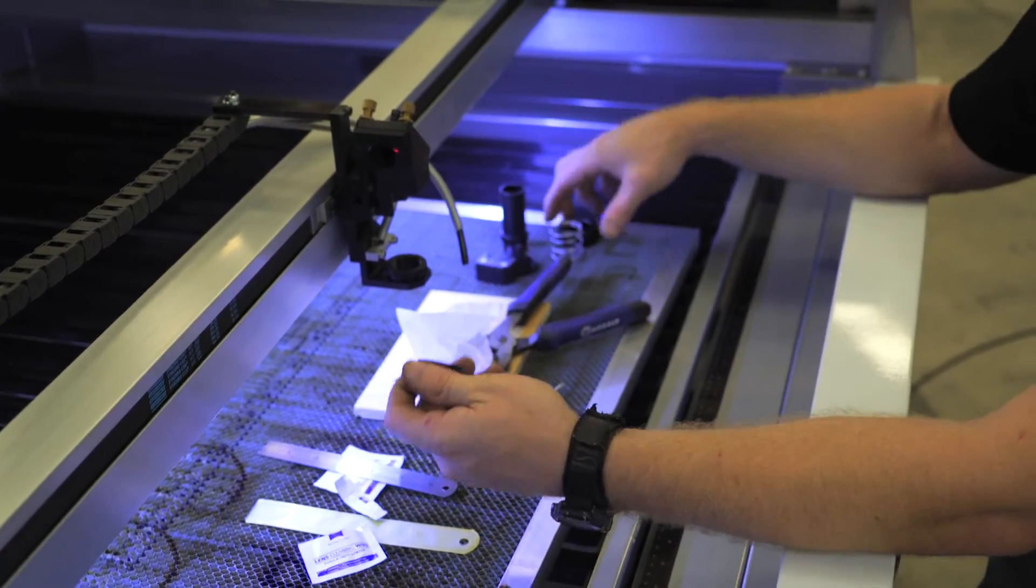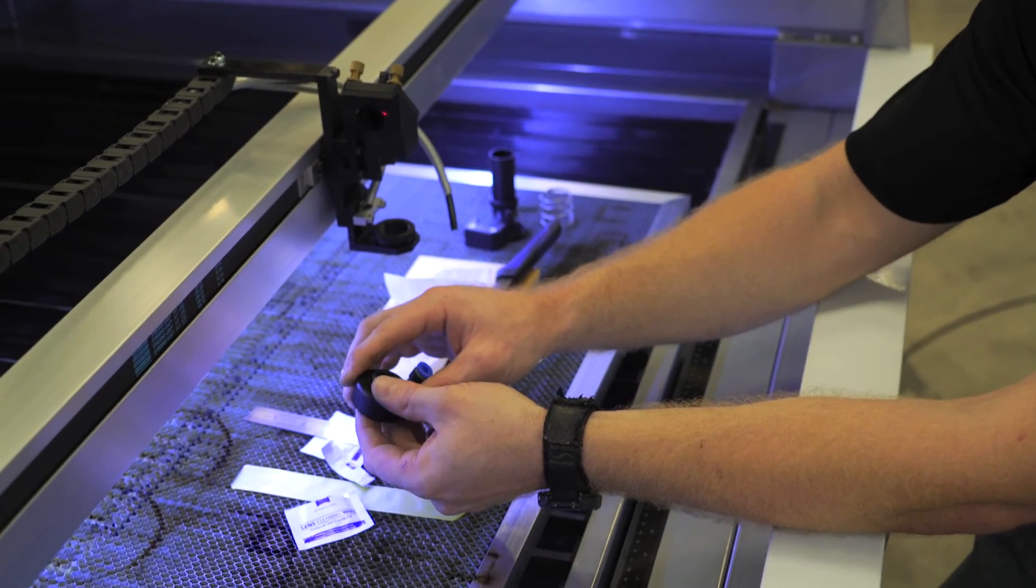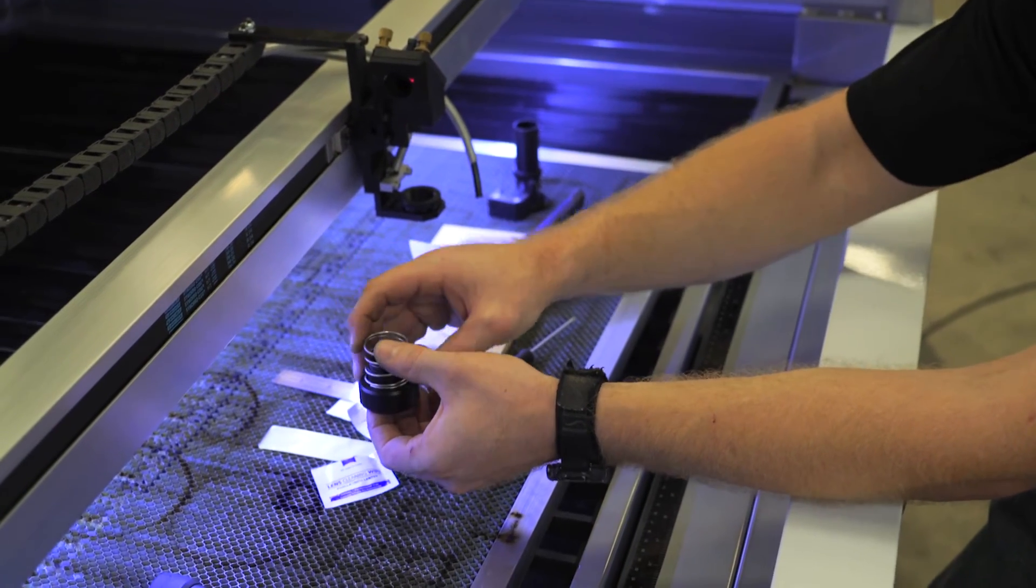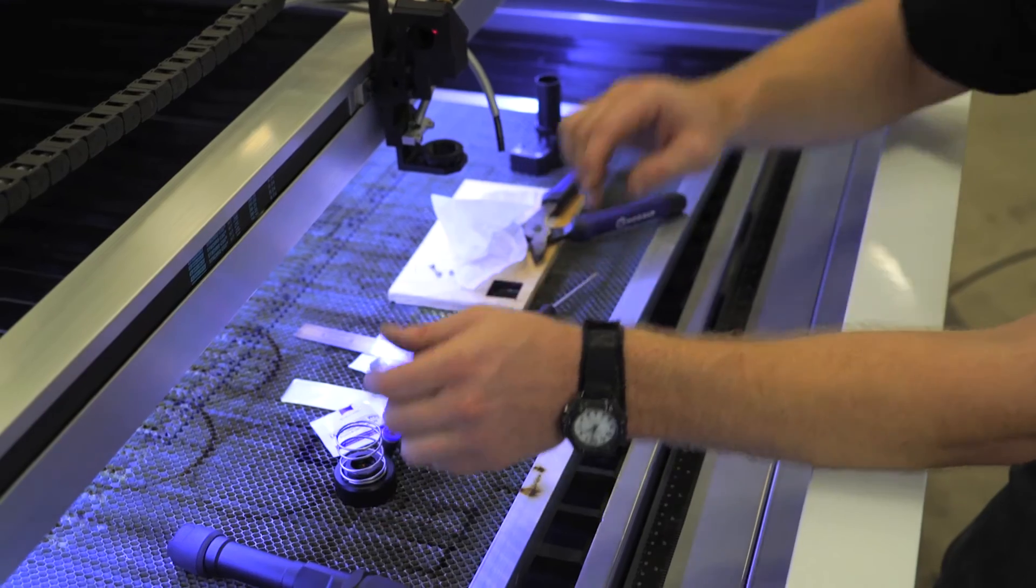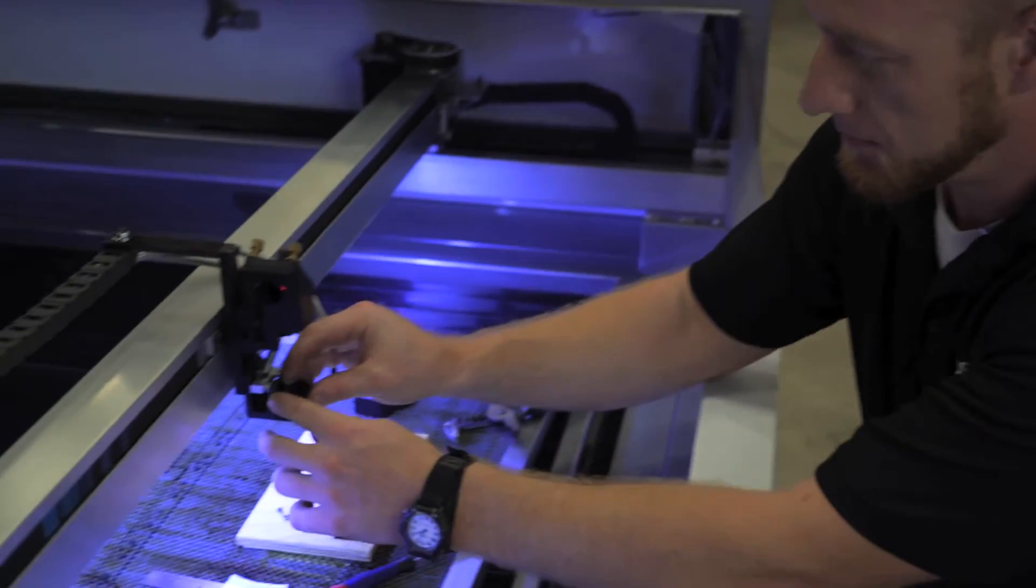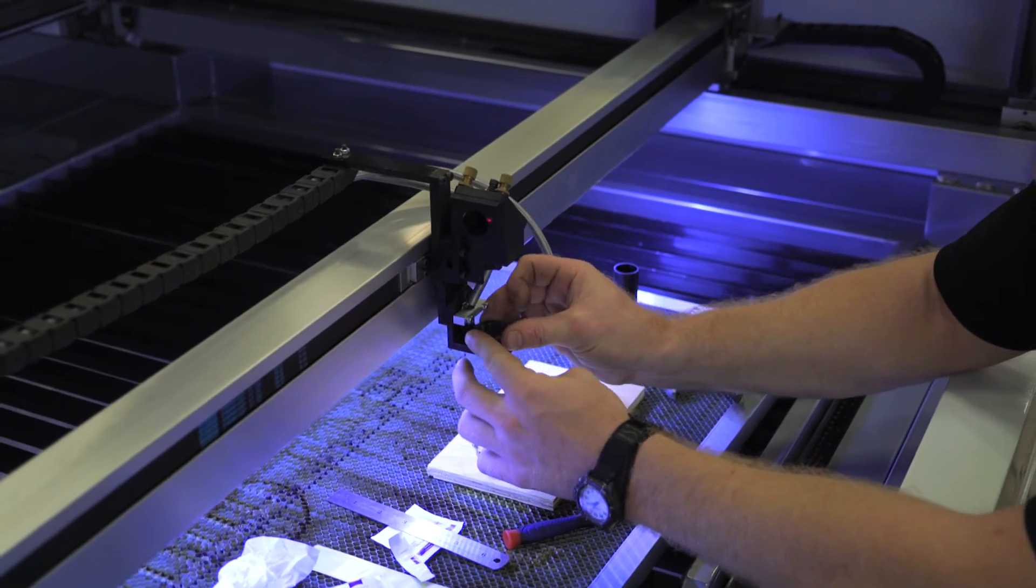Now that we've got that all nice and tight, this part goes back in here, spring goes back on top, we put that off to the side. Next take the housing nut, put it back in where you took it out, screw it all the way down to the bottom.